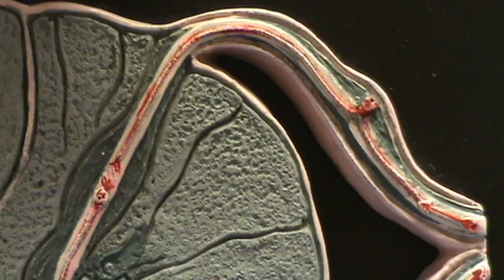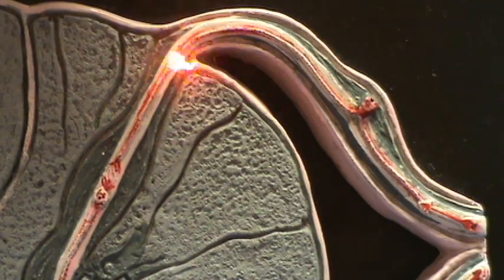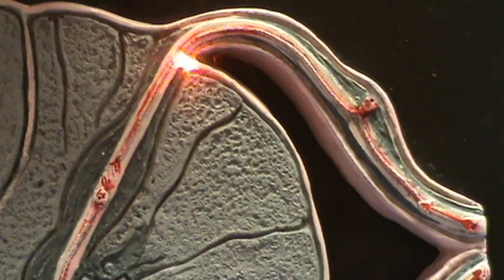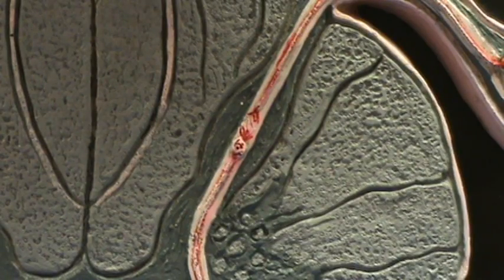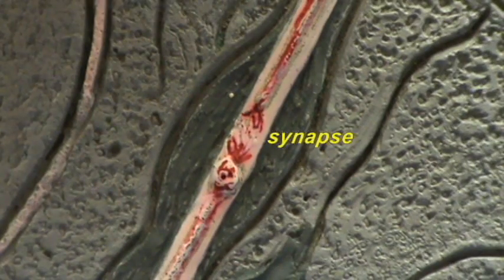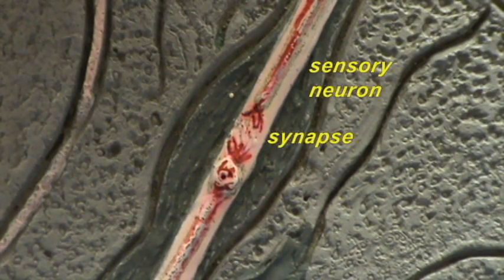If you follow the neuron, it goes into the spinal cord at this posterior location and then enters the posterior horn of the gray matter. Right over here, there is a synapse between the sensory neuron and another neuron called an interneuron.